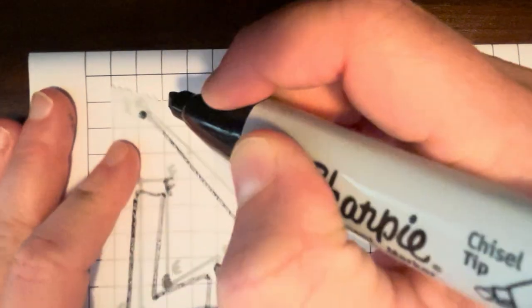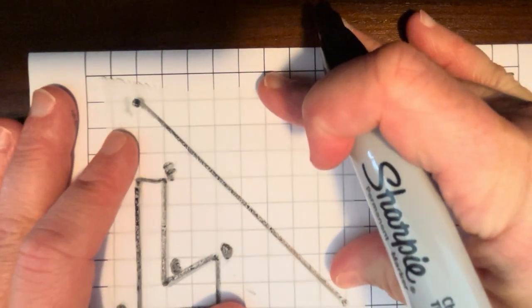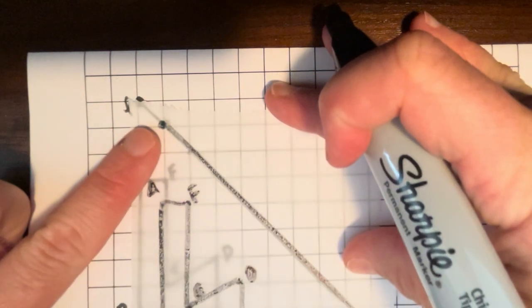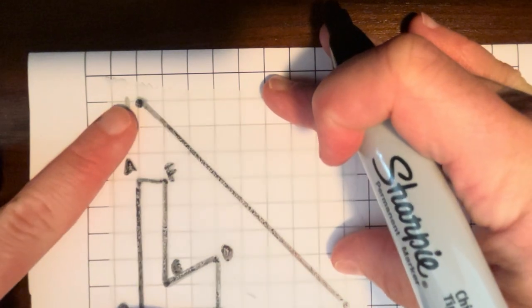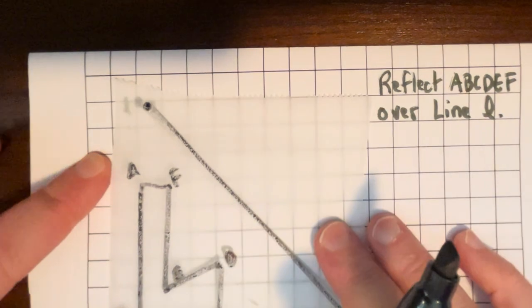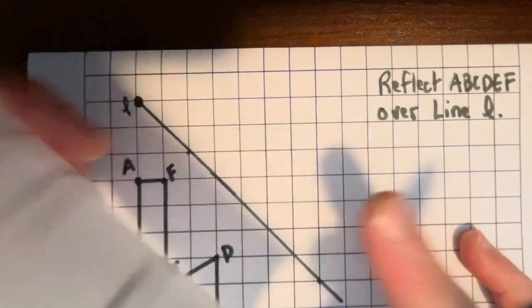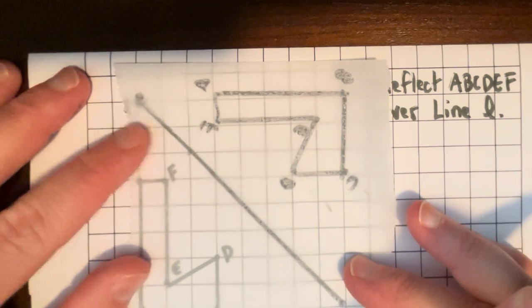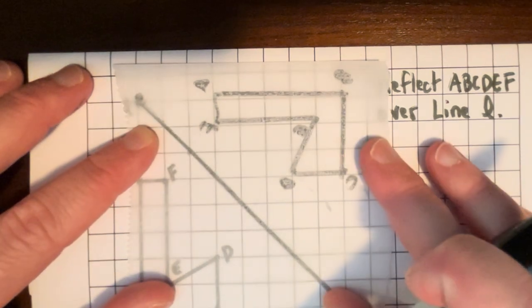Make sure they line up and then if I match those dots up at the end, then I'll know that I haven't slid my line by accident. Lining everything up. So that is where my reflection is going to be.